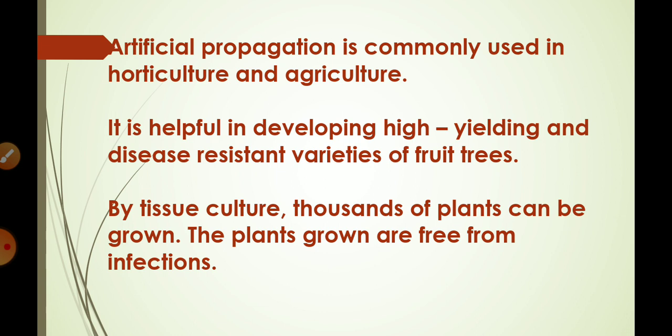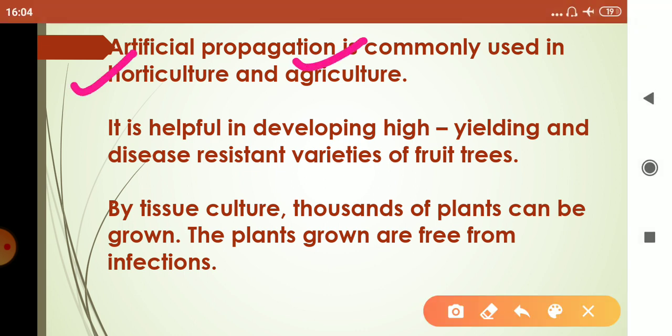Tissue culture is also used. These methods are commonly used in horticulture and agriculture. Horticulture is an art of cultivating plants — we cultivate food plants as well as plants for decorative purposes. In agriculture we grow crops, and animal rearing also comes under agriculture.